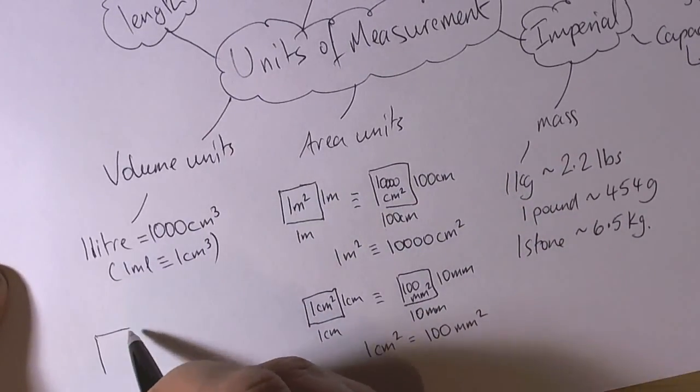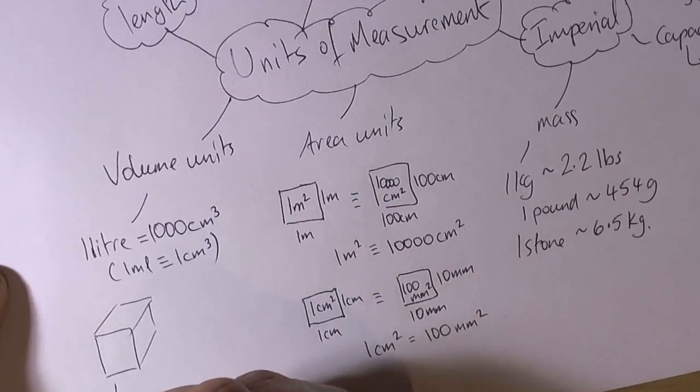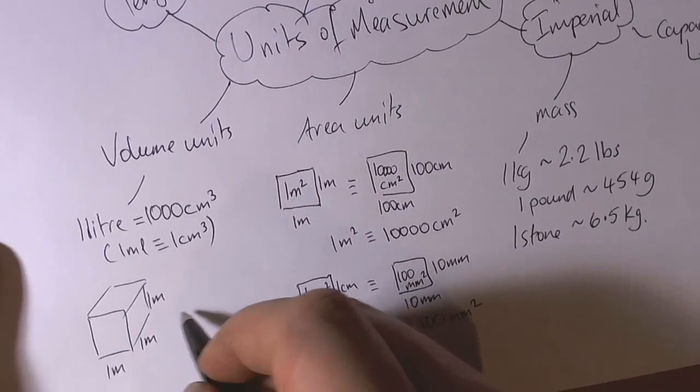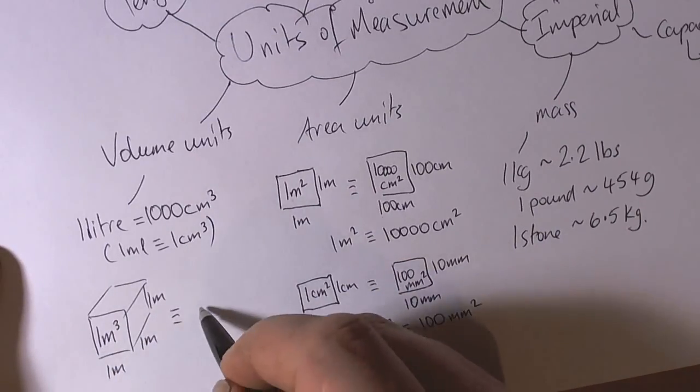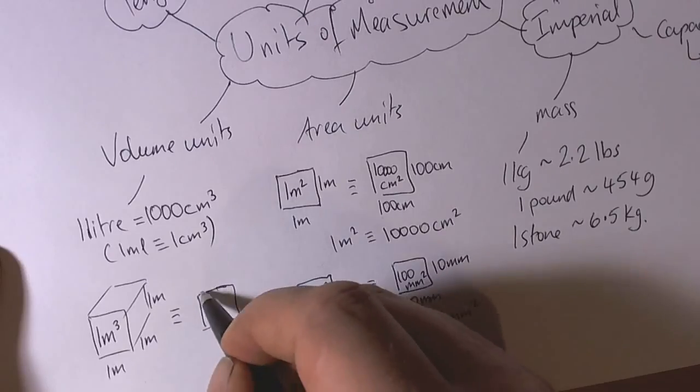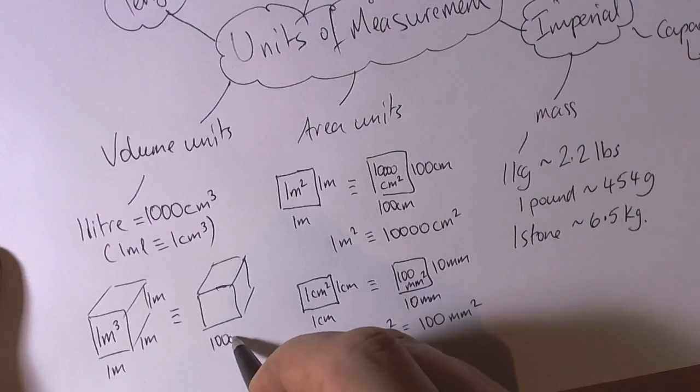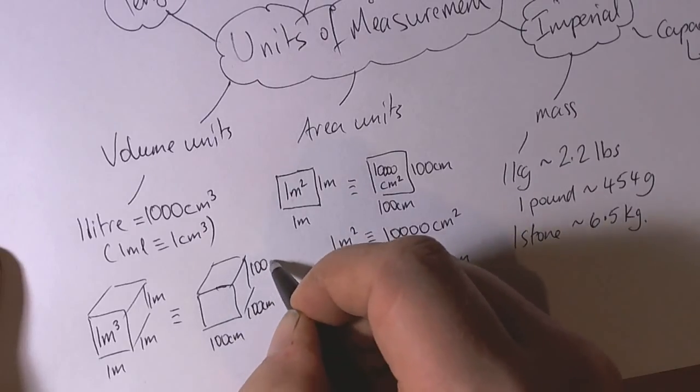But we also need to recognise again that we could have a cube made up of 1 metre by 1 metre by 1 metre. This would have a volume of 1 cubic metre,